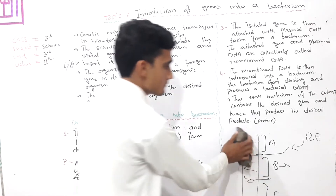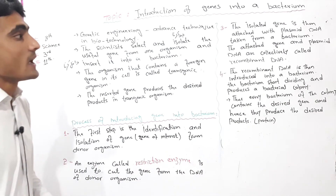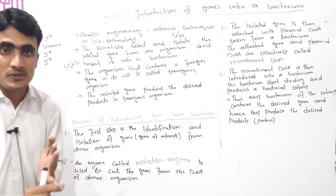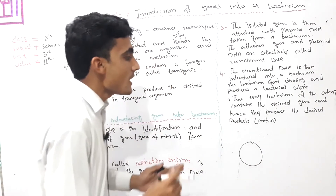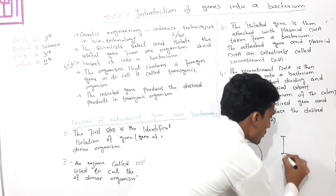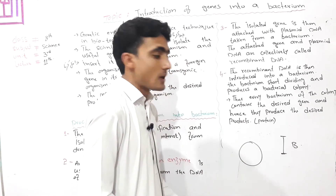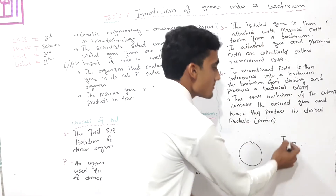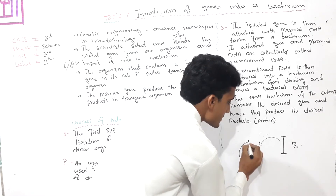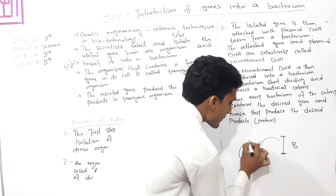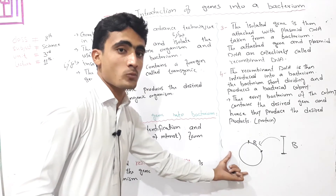The third step: the isolated gene is then attached with the plasmid DNA taken from a bacterium. Plasmid is a circular-shaped bacterial extra-nuclear chromosome — extra-nuclear DNA found in bacteria. The isolated B gene from the donor organism is attached to the plasmid DNA from the bacterium.